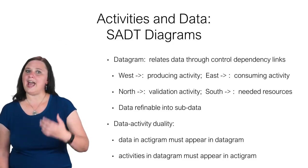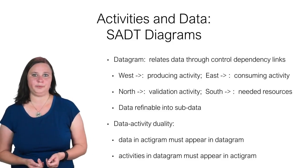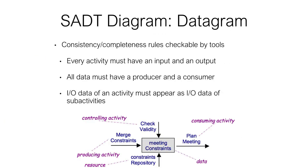Just like in the actigram, data is refinable into sub-data. Now let's look at a datagram based off of our actigram. Here we have 'meeting constraints' — data from our original actigram. Meeting constraints has 'merge constraints' as the producing activity, 'planned meeting' as the consuming activity, 'check validity' is the controlling activity, and we've also got a 'constraints repository' giving support as our resource.